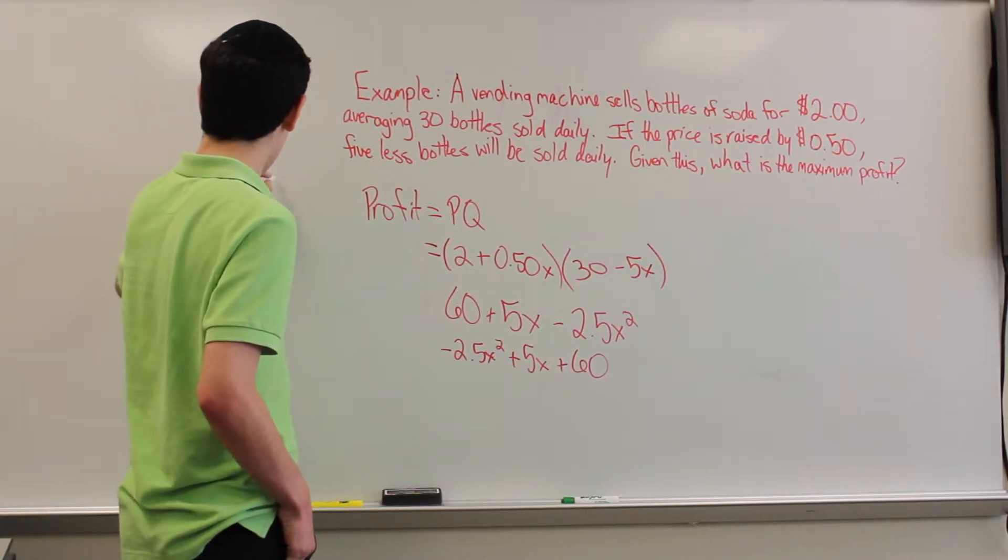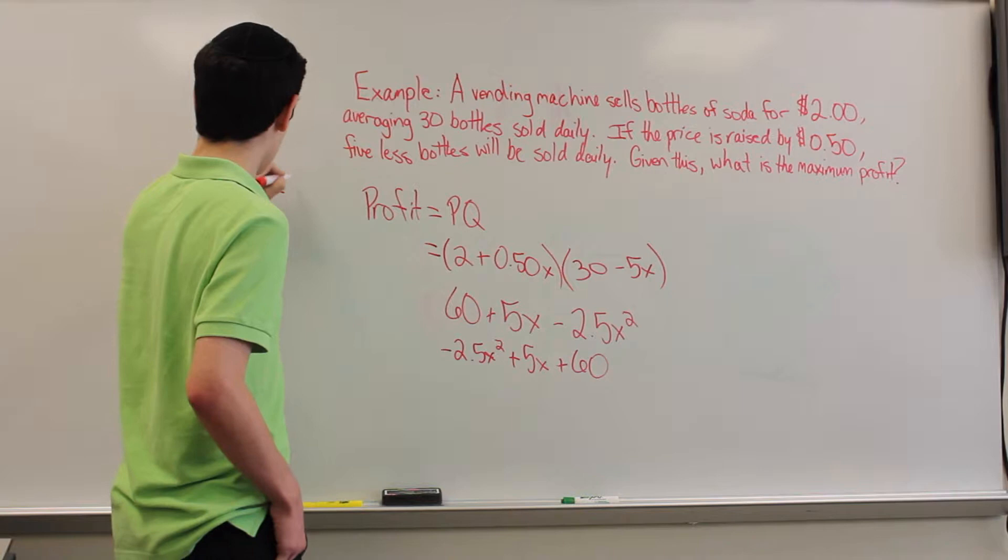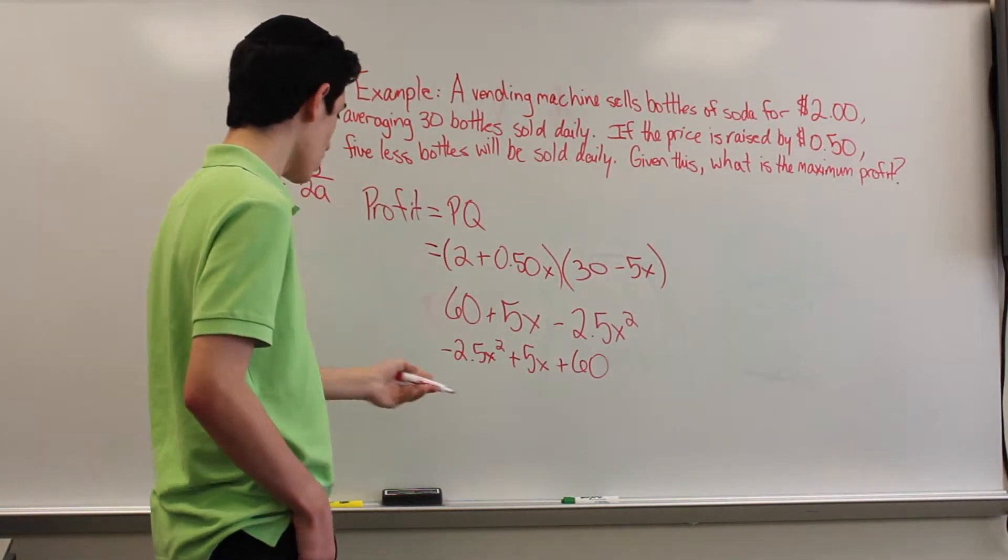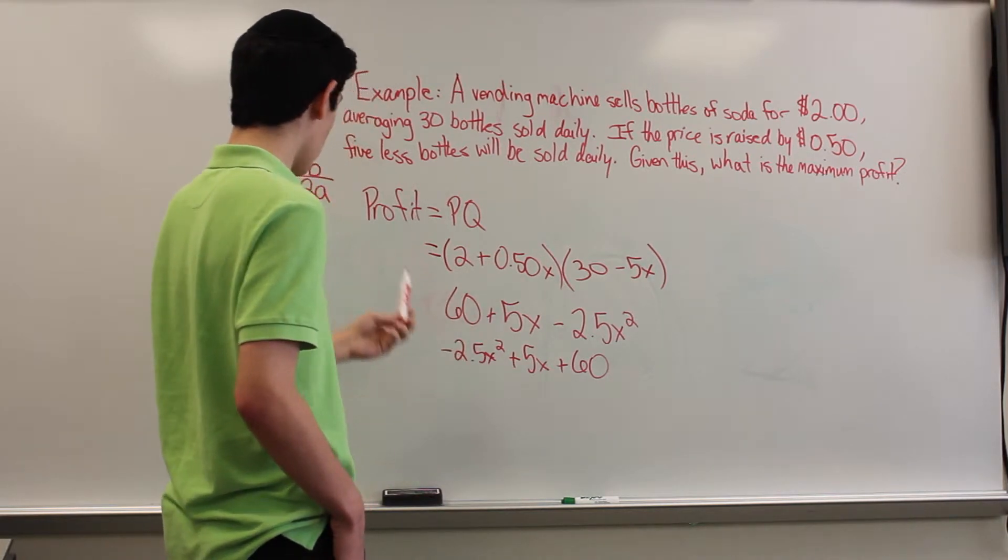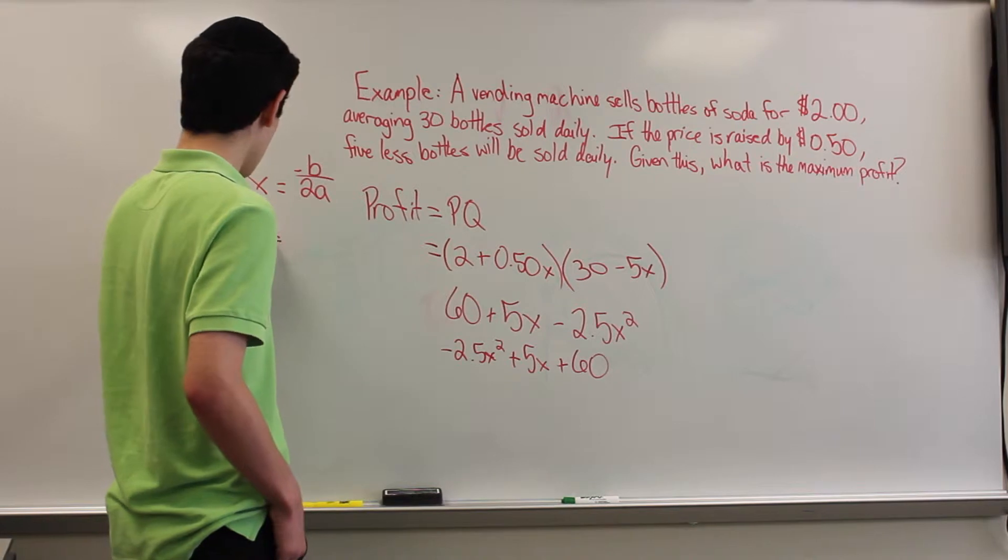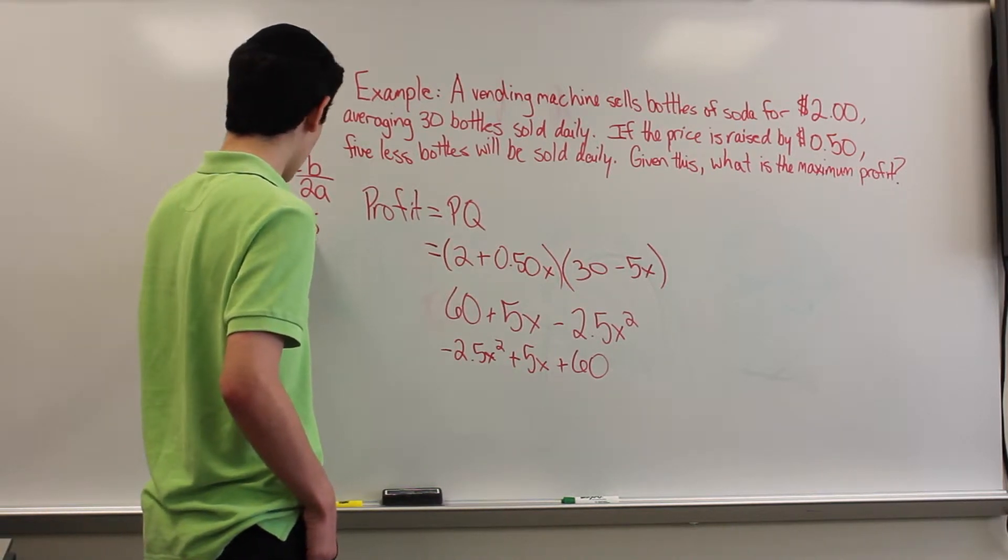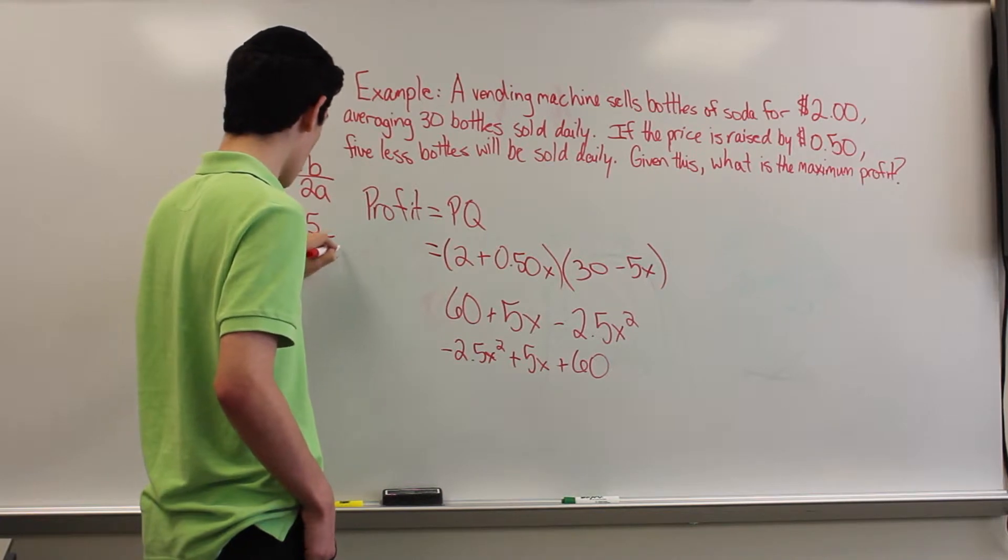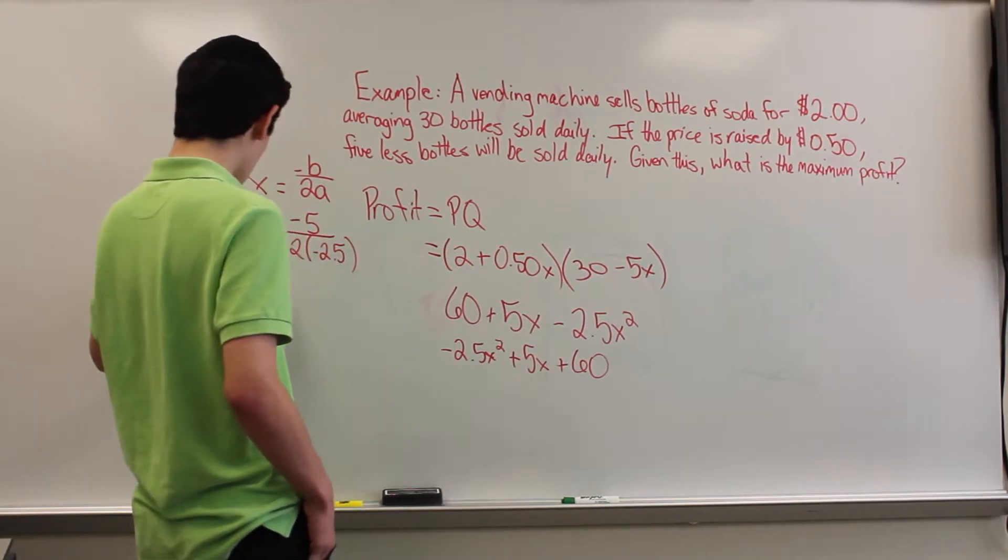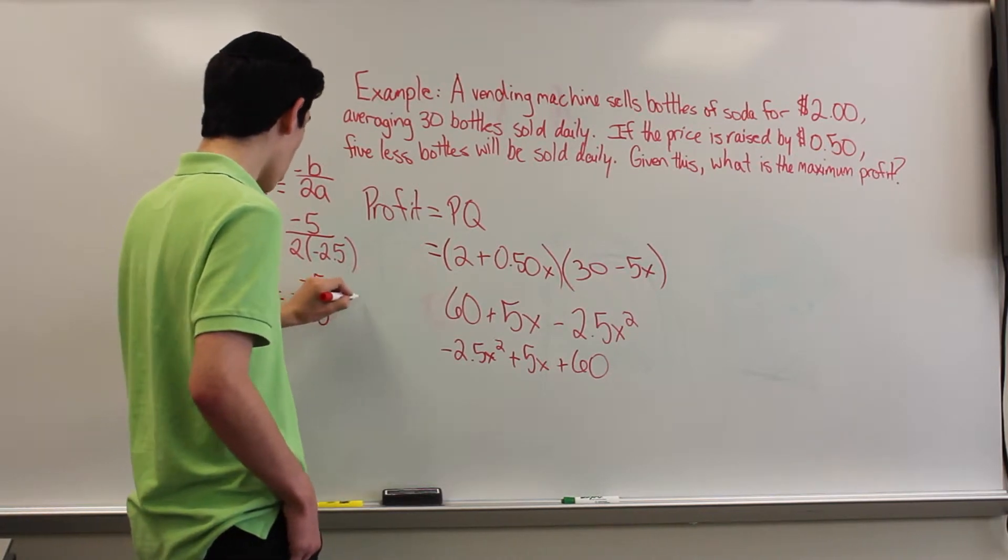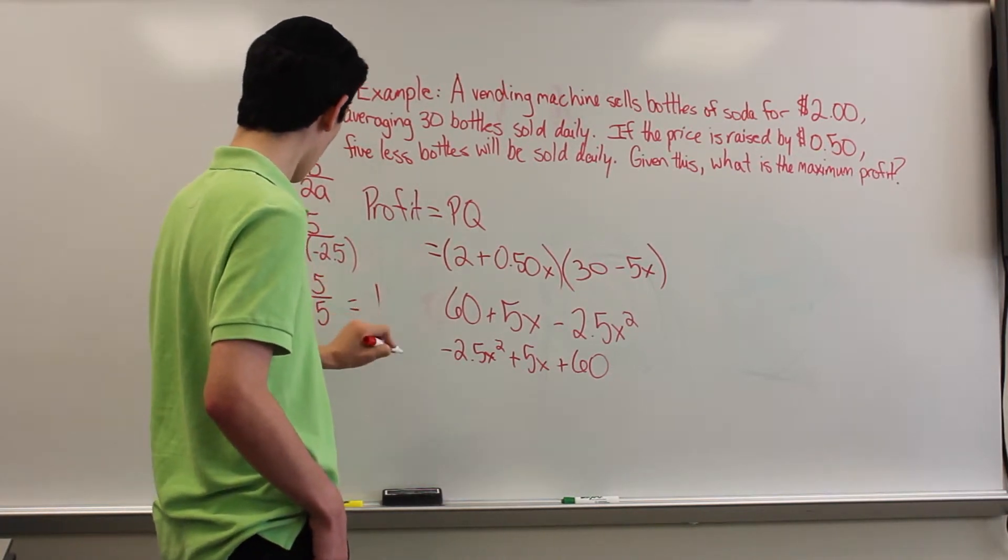Which we know is x equals negative b over 2a, we have our b is 5 and our a is negative 2.5. So x equals negative 5 over 2 times negative 2.5, which simplifies out to be negative 5 over negative 5 or even simpler, 1.